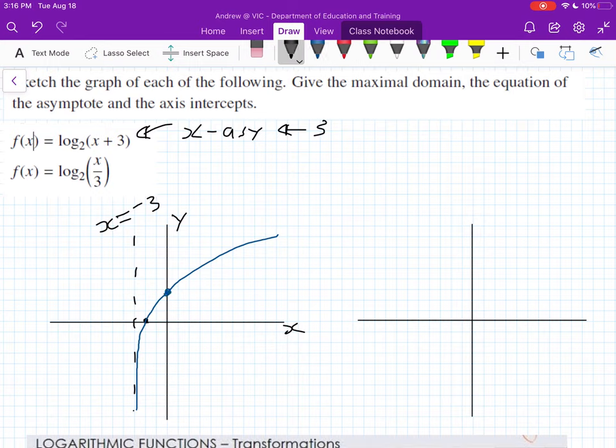So this here is log₂(3). That's not the best one. I've got my asymptote here. I've got my intercept here. I need my x-intercept. So that's down here.